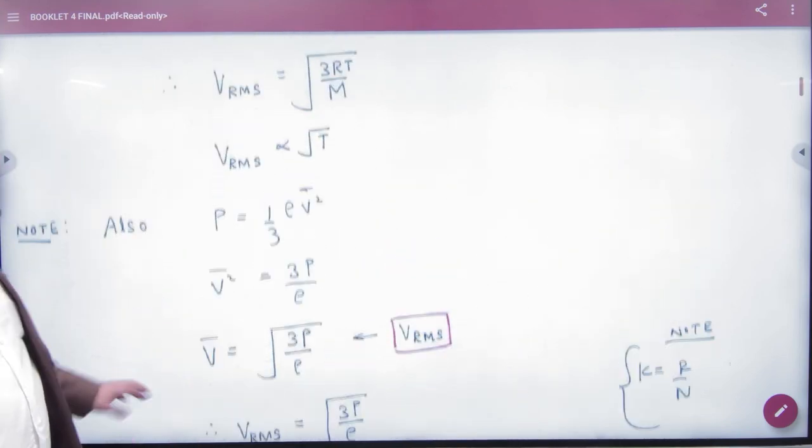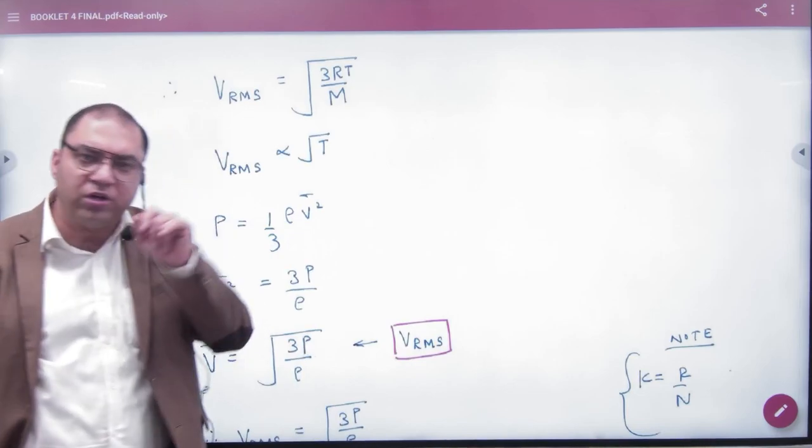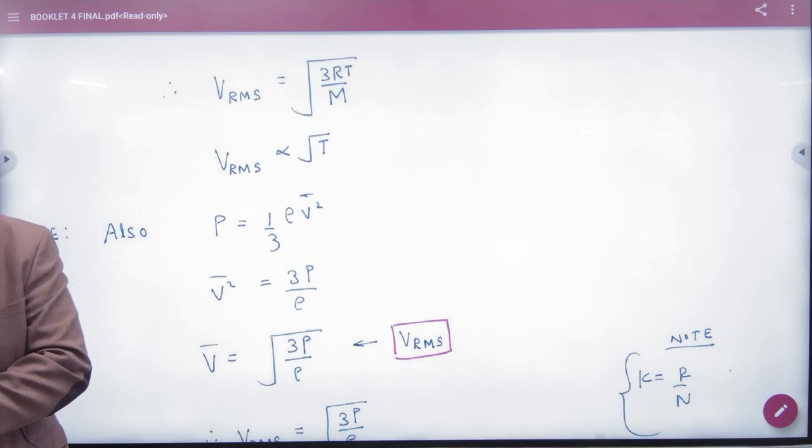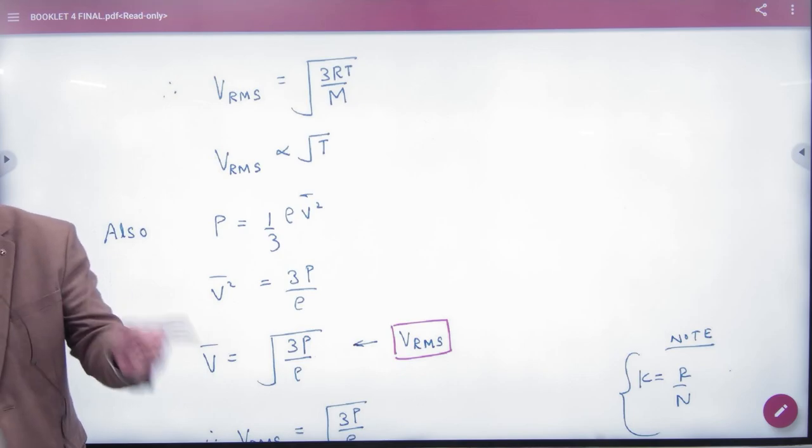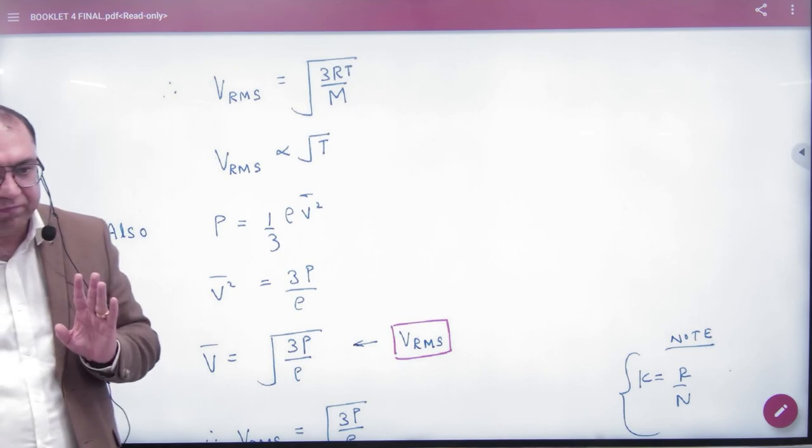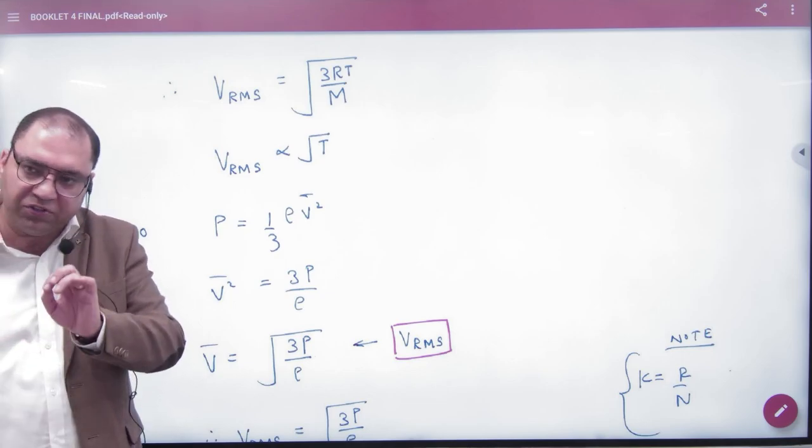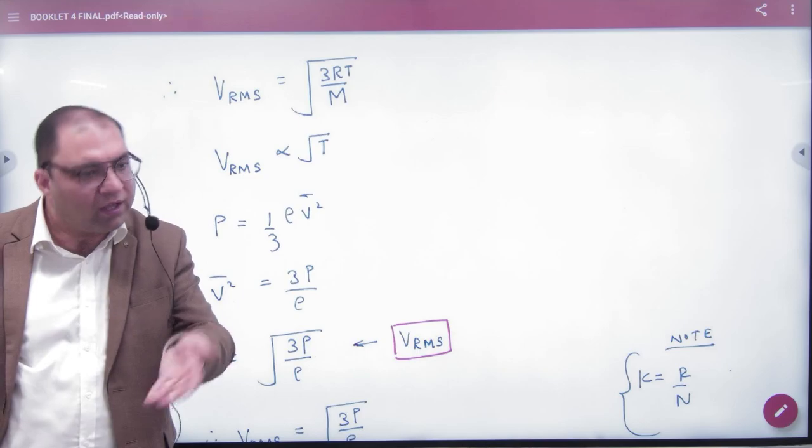When we had average pressure, I added a bar notation everywhere. Someone asked me why add a bar? So I can differentiate between mean velocity and V for volume without confusion. The mass confusion is resolved. Volume and velocity are differentiated. This is fair.